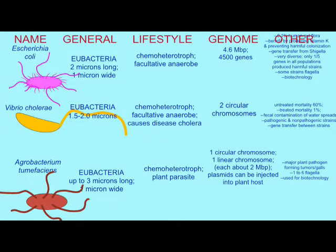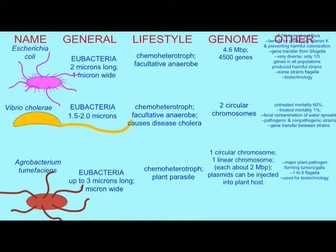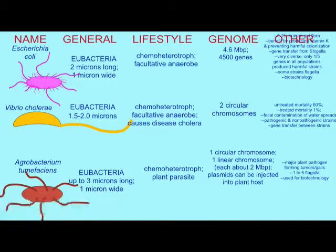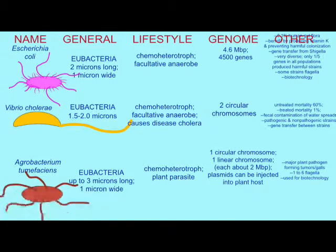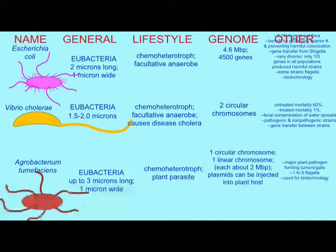The Vibrio which causes the disease cholera possesses not one circular chromosome but two circular chromosomes. Some bacteria possess three circular chromosomes. Not all bacterial chromosomes are circular — some can be linear, similar to those you see in eukaryotes.